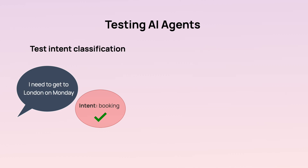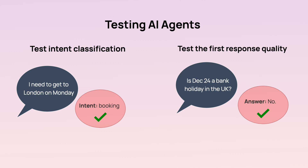Another component to test is intent classification. Often the LLM is tasked to first classify the user request and then route the conversation to a specific step. This is purely a classification problem, so you can simulate many inputs with known classification types and then test how well the LLM identifies them.